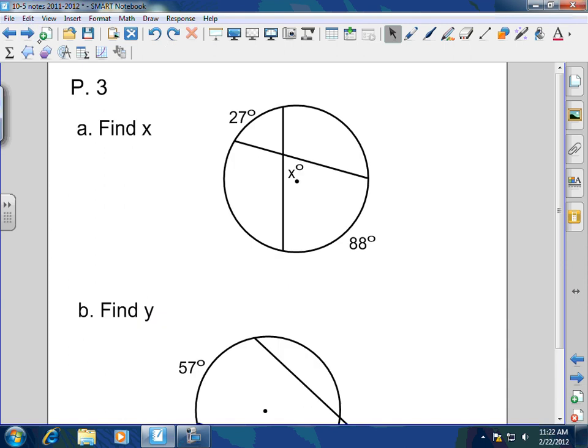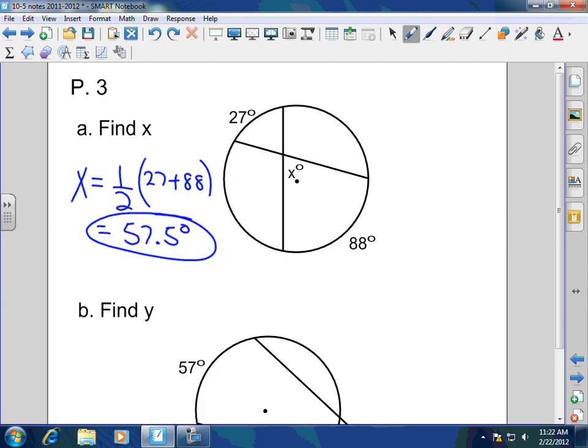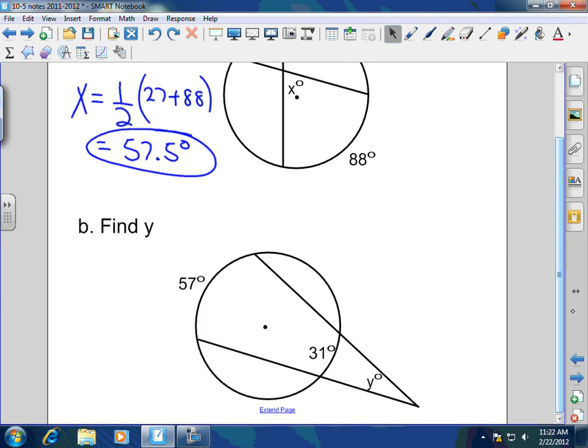How would we find angle X here in this particular case? This is a chord chord, so this is half of 27 plus 88, and that's going to be 115. Half of 115 is 57.5 degrees. Very good.